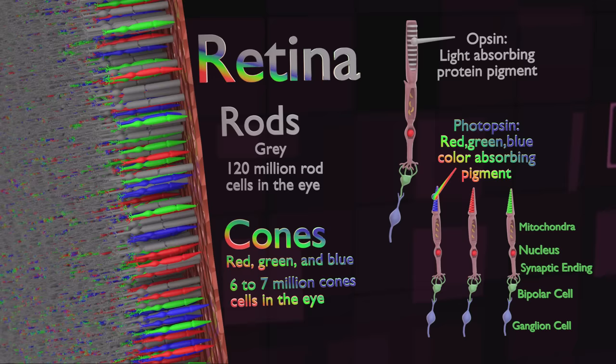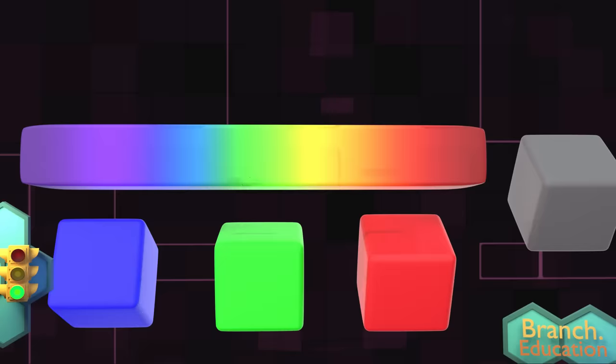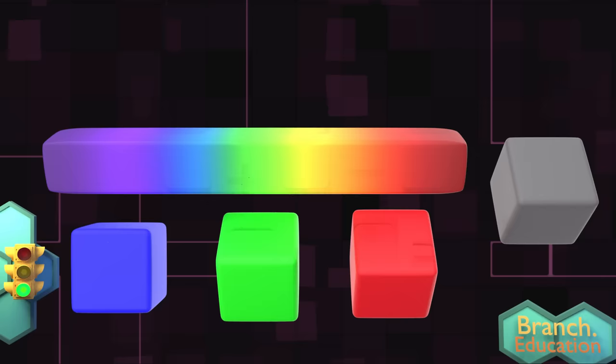Now this brings us to a key question. If your eye only has three different types of cone cells, each of which can only absorb red, green, or blue color, how do we see this entire spectrum of colors?